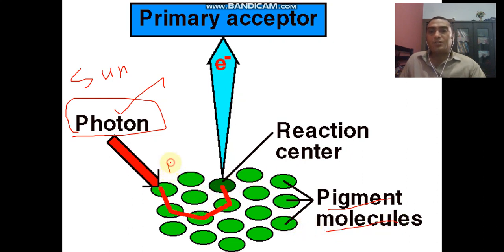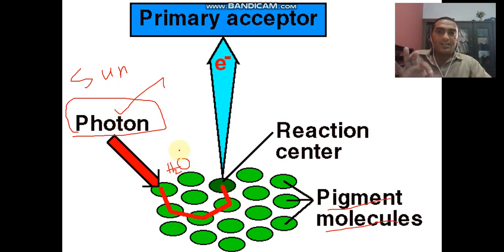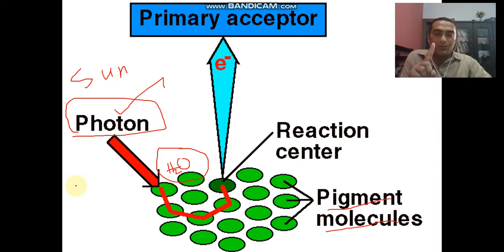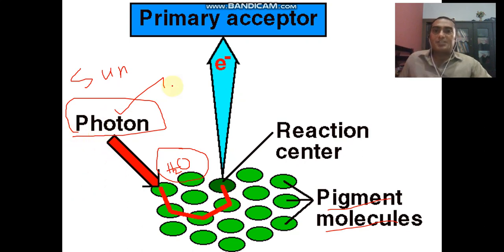Here, breakdown of water occurs, known as photolysis. Photolysis always occurs in the presence of sunlight. Blue and red light is very important — blue and red light is responsible for breaking the water molecule, and it emits electrons. Two electrons are emitted from one water molecule.